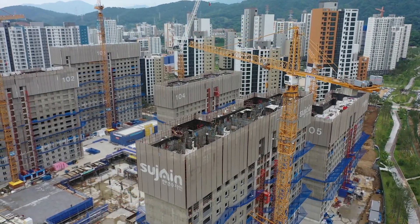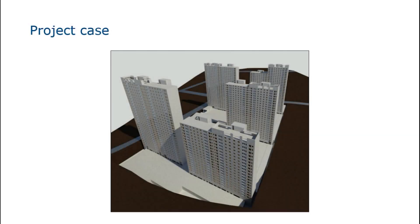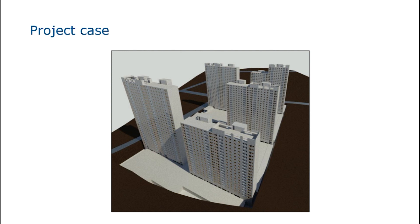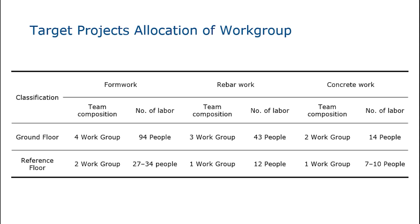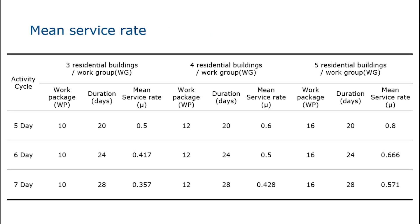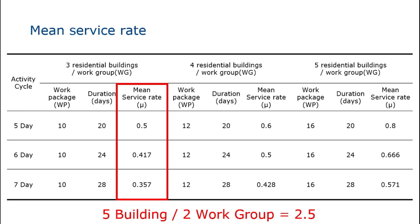We applied the 4D digital twin framework to a real project. All construction project information was digitalized for the BIM model, including formwork, rebar works, and concrete works quantity per unit of work package. The elements to be input into the queuing models were extracted from the digitalized information. The target project has five units and a total of 130 work packages. The resource input plan of the site is expressed in a table showing the number of manpower to be assigned to each work group. However, the actual productivity of the input manpower differs, and the problem of how much manpower must be input to complete one work package contains many uncertainties. A table shows the number of residential buildings assigned to one work group and the mean service rate according to the activity cycle.